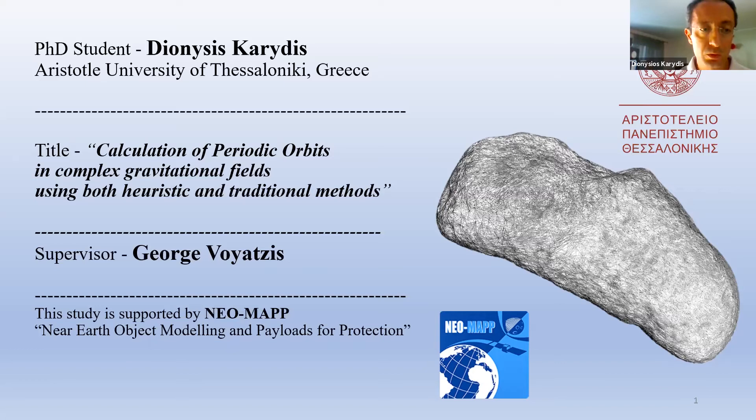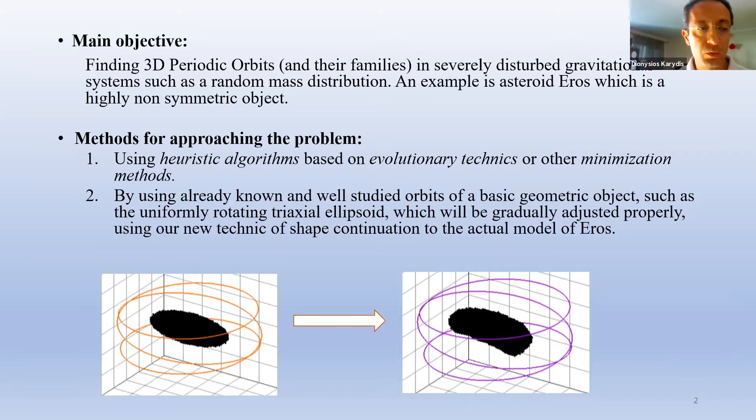With this study, we expect to find periodic orbits and their families in severely disturbed gravitational systems such as the two or three-body problem using bodies of random mass distribution. The search for periodic orbits can be utilized using heuristic algorithms based on evolutionary techniques. Furthermore, other minimization methods have been used that simulate natural processes without necessarily knowing about the dynamics of the system that is being analyzed.